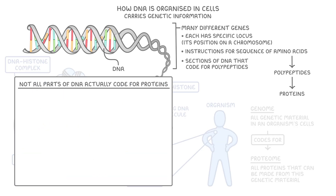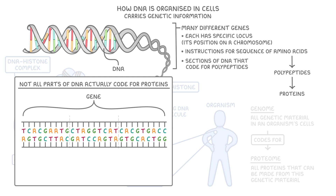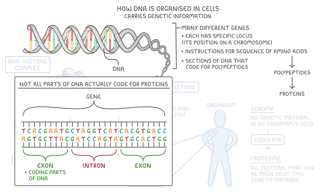It's also important to know that not all parts of a DNA molecule actually code for proteins. Within a given gene, exons are the coding parts of DNA that do contain instructions for making polypeptides, whilst introns are non-coding parts of DNA that do not directly code for polypeptides, but they can have other functions instead.